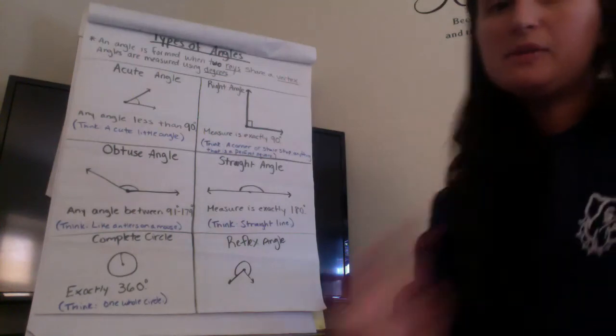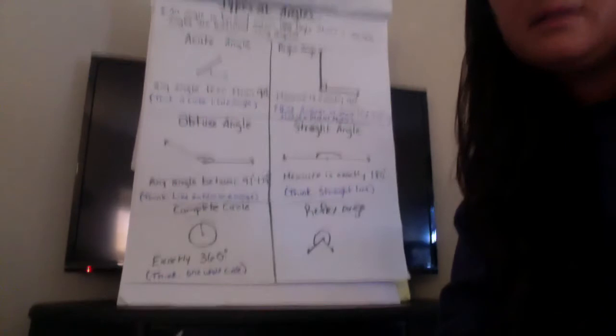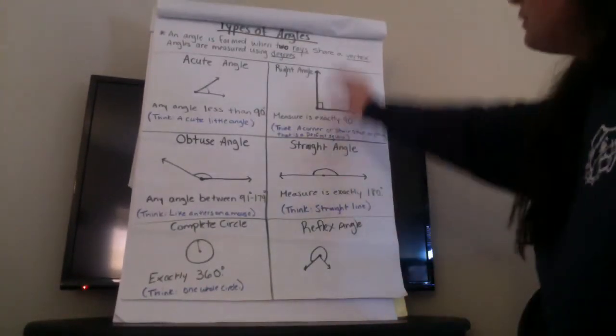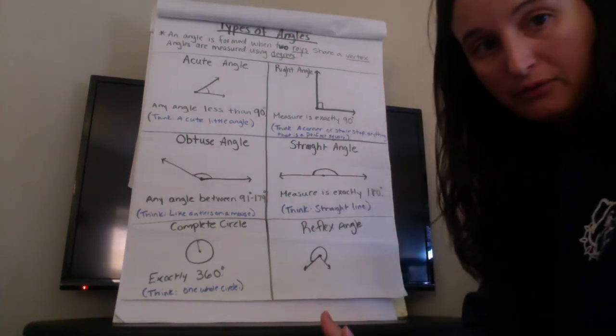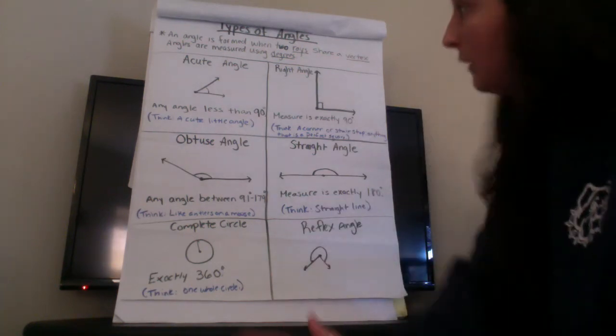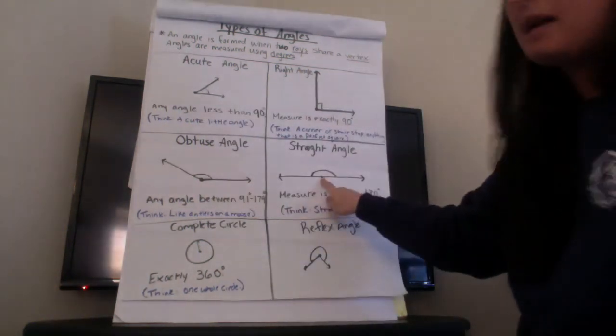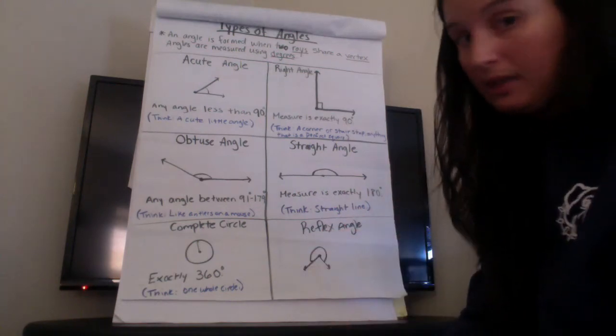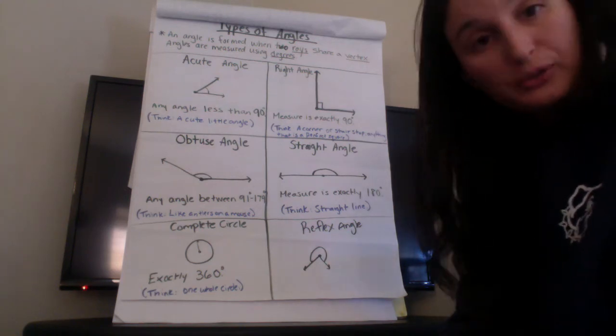All right so the different types of angles we learned about, make sure you can see that okay. So an angle is formed when two rays meet and they share a vertex which is that center point. Your vertex would be here, here, here, here, always that point where the two lines are meeting and angles are measured in what we call degrees.